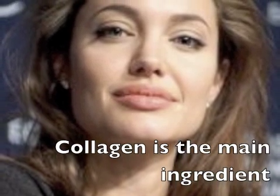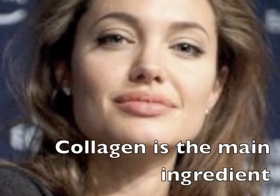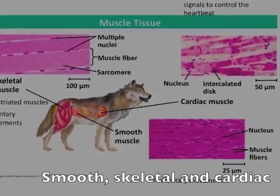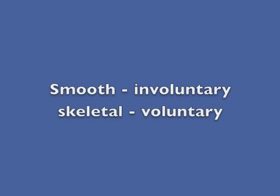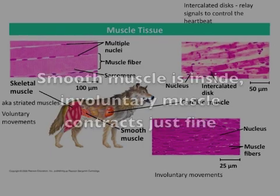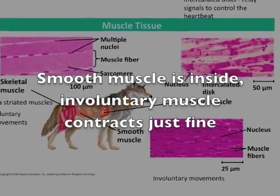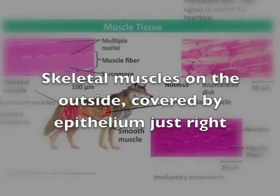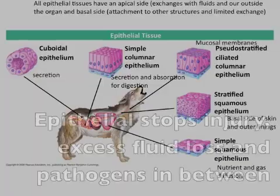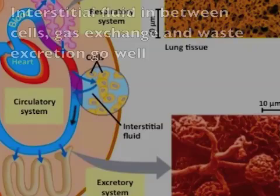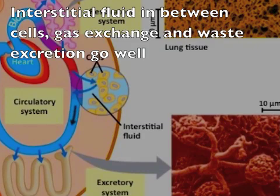Collagen is the main ingredient. Smooth, skeletal, and cardiac muscles assist with movement. Smooth muscle is inside — involuntary. Skeletal muscles are on the outside, covered by epithelium. Epithelium stops injury, excess fluid loss, and pathogen entry. Interstitial fluid is in between the cells, where the gut exchanges waste and secretions.